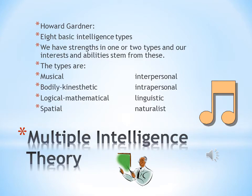Howard Gardner's Multiple Intelligence Theory asks a common question in a totally different way. Instead of asking, how smart are you, Howard Gardner believes we should ask, how are you smart? We all have strengths in different types of intelligences, and our interests and abilities stem from these, making us good at certain things and not so great at others.